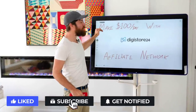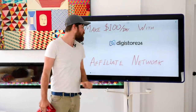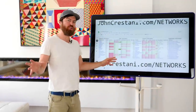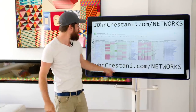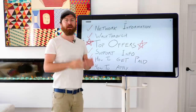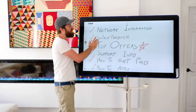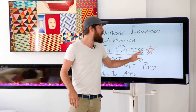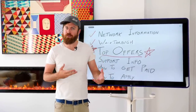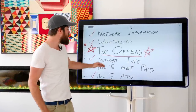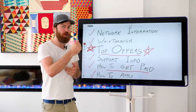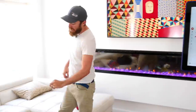Hey, John Crestani here and in this video, I'm going to be going over how you can earn and get paid $100 a day with the Digistore affiliate network. This is going to be a money video and I'll be going over and referencing this sheet a lot. All of the information I go over is on the sheet called johncristani.com/networks which is down below. You can see the link where I show you my breakdown of different affiliate networks. I'll be giving you information about the network, doing a walkthrough of the Digistore affiliate network to help you understand the interface, how to find top offers, how to get support from your affiliate managers, how you get paid, and how you can apply to get Digistore to start paying you.